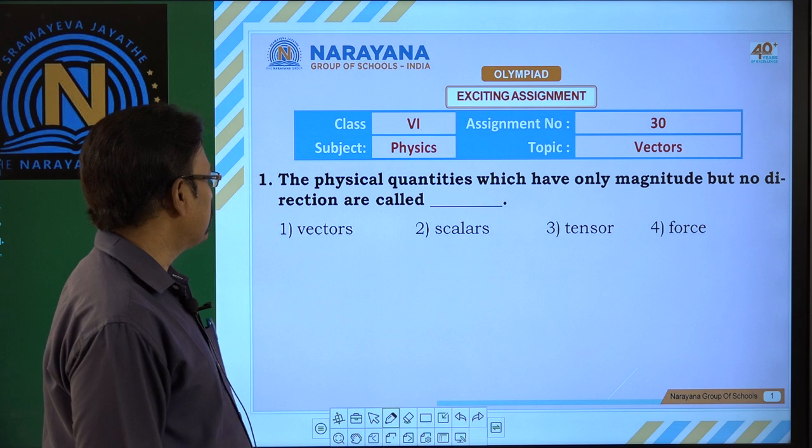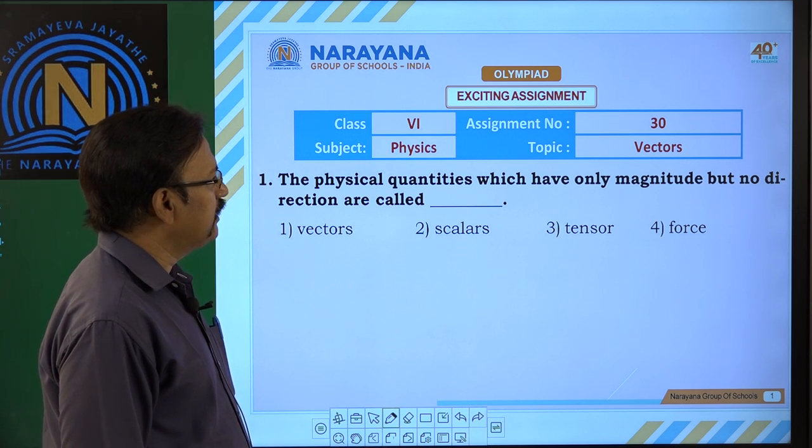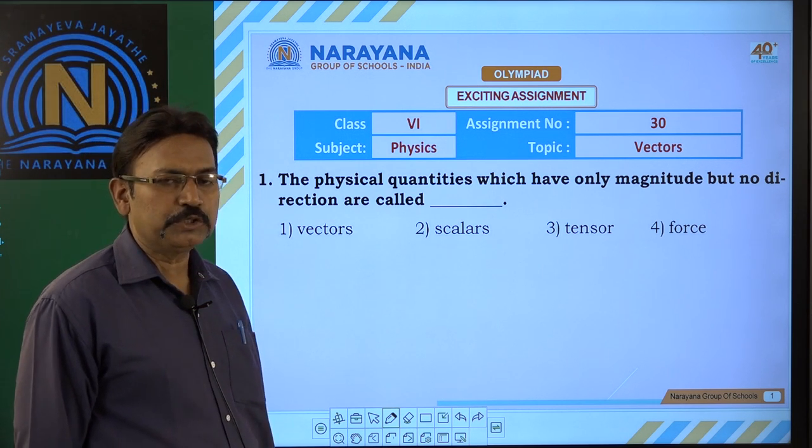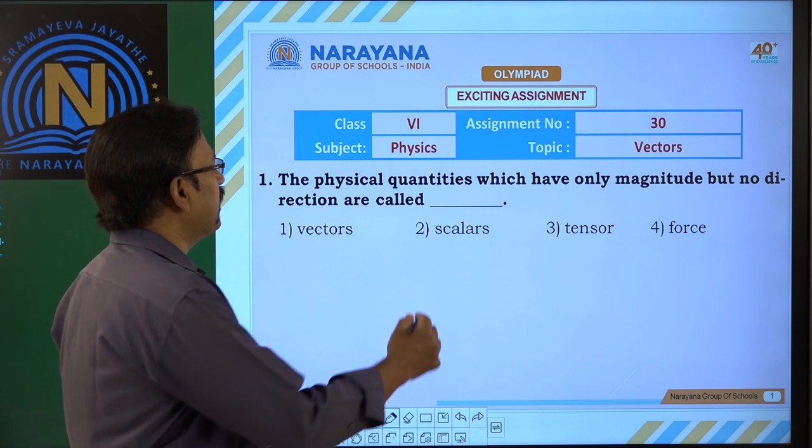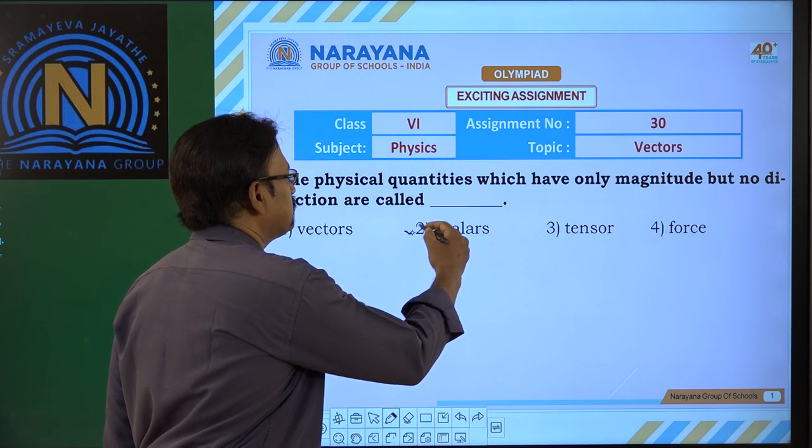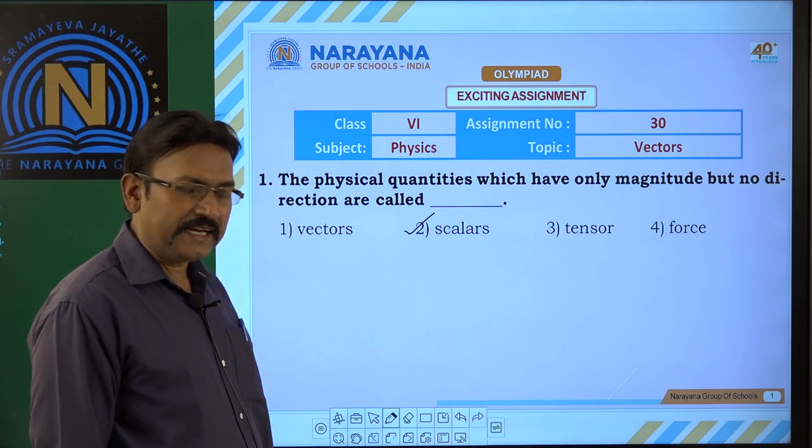Let us see the first question. The physical quantities which have only magnitude but no direction are called scalar quantities. This is the definition of scalar quantities. So, second option.